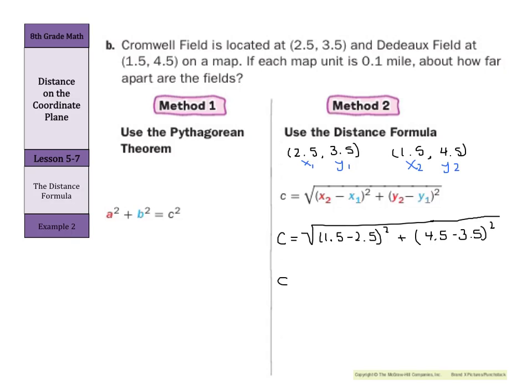1½ - 2½ is -1, plus 4½ - 3½ is just 1, squared. This -1 squared is -1 times -1 is just 1, 1² is 1 times 1, it's just 1, so c is going to equal the square root of 2, and the square root of 2 is about 1.41.